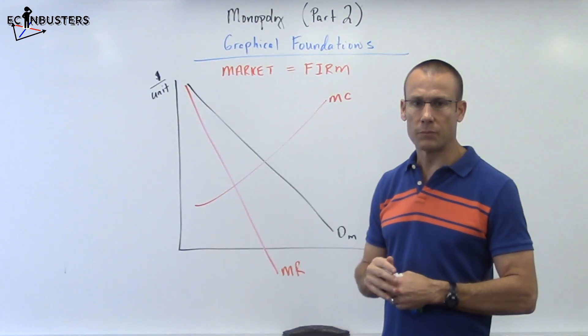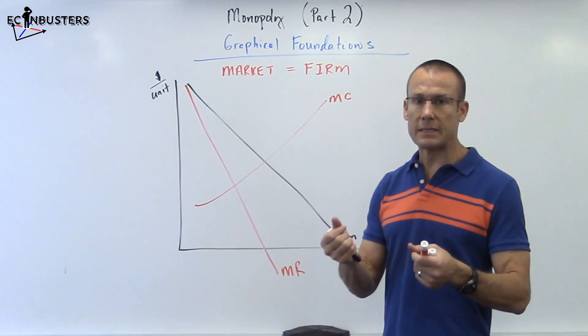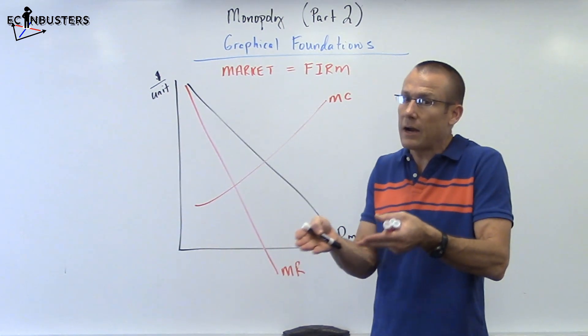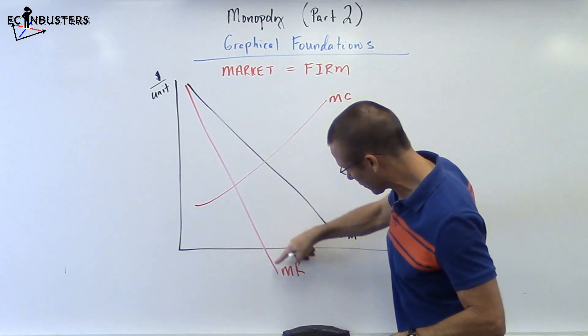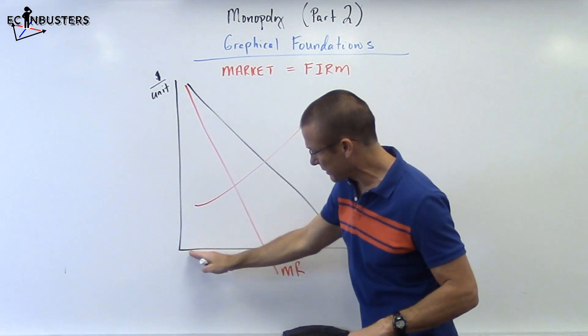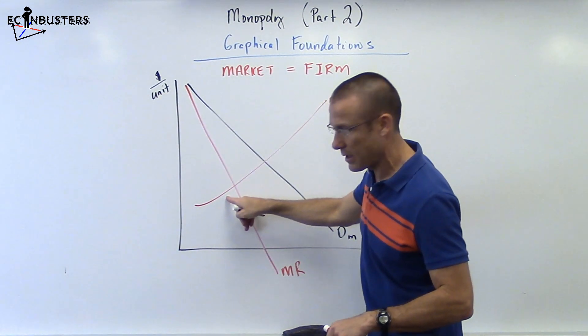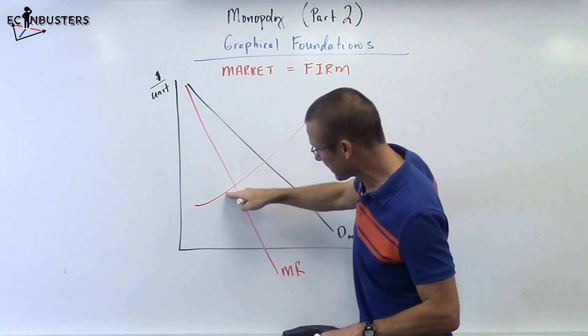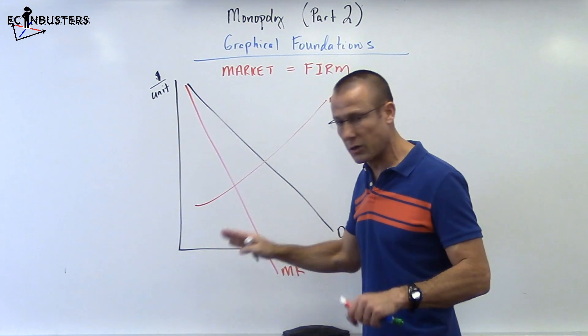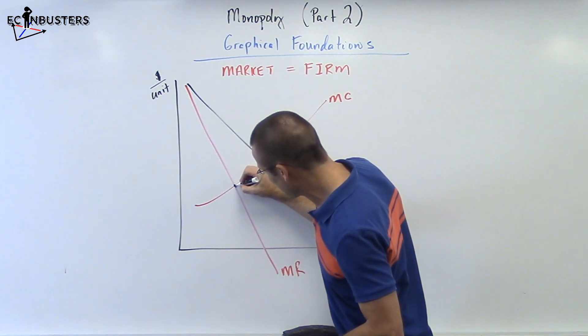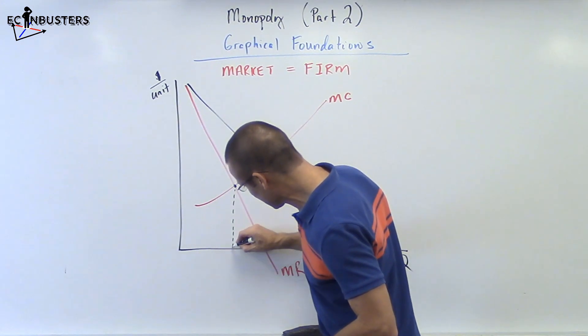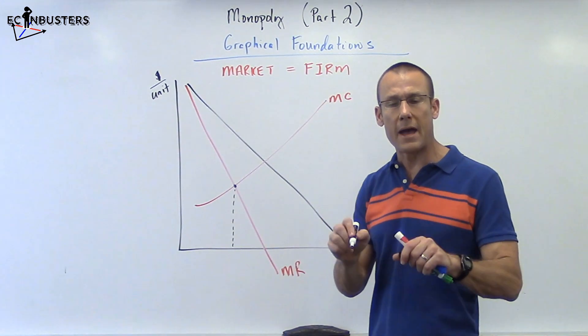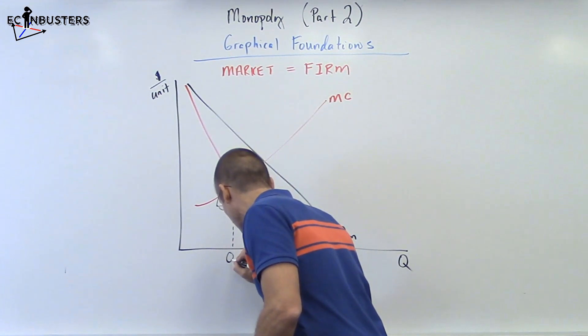Now, find the output level. The output level is still based on a fundamental rule that should be almost intuitive right now. We're going to produce as long as the MR curve, as long as MR for any particular good is above MC. As long as the MR is above the MC for any good, we're going to produce it. We're going to keep producing until they become equal. So MR equals MC right there. That determines our output level. That's where we maximize profit. We have to maximize profit at that amount. So Q profit max.